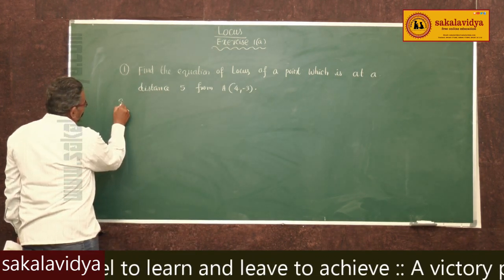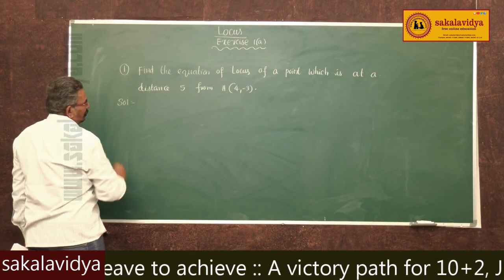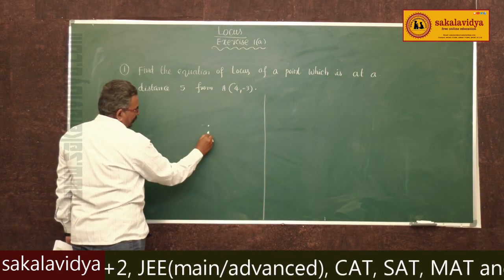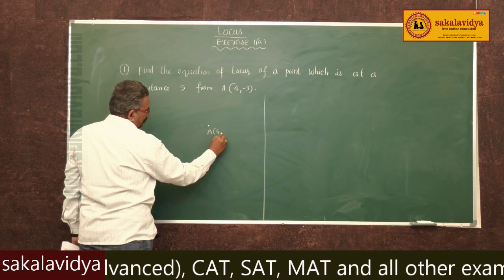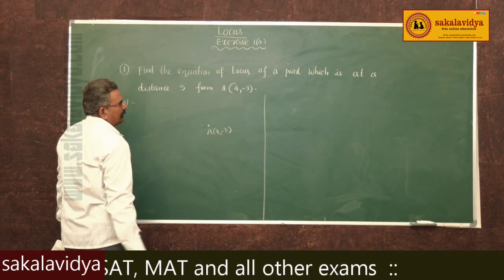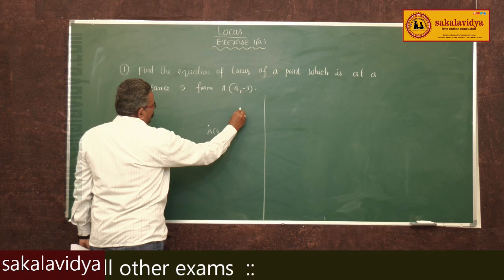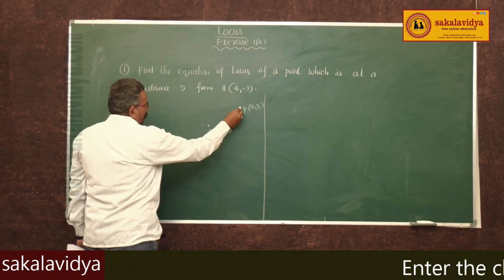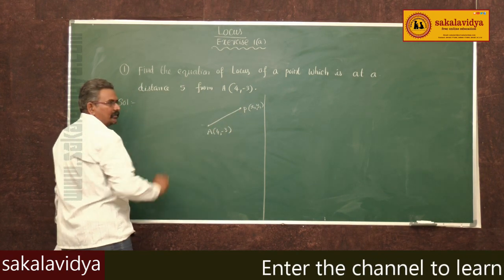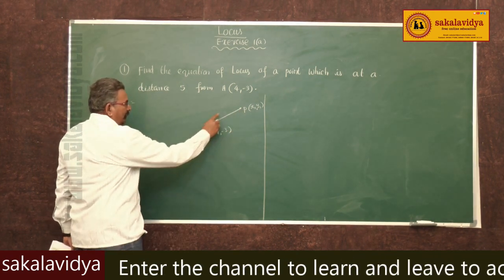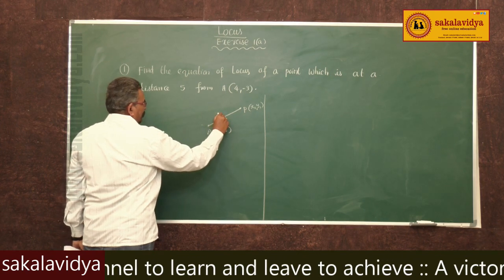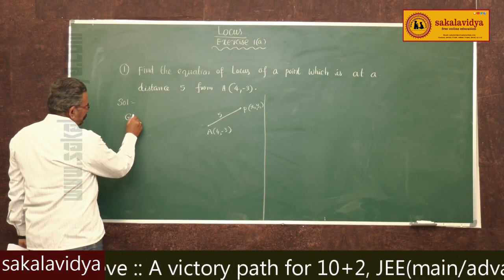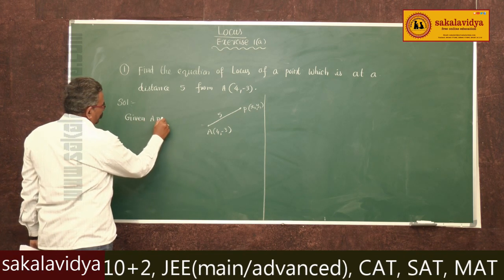Let us solve this problem. We have to find out the equation of the locus which is at a distance of 5 units from point A(4, -3). Here, suppose the given point is A, that is (4, -3). The point on the locus, say P(x1, y1) — join AP. The distance from A to P is 5 units, so AP is equal to 5.